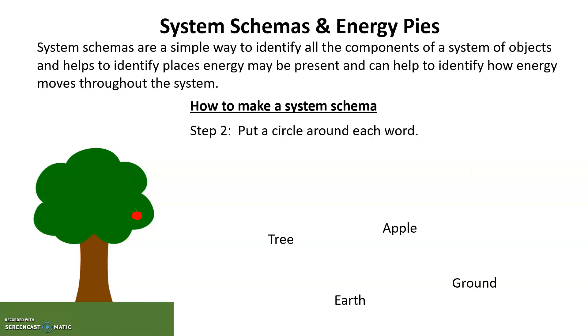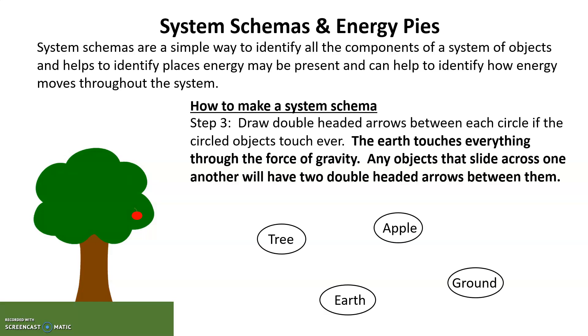Second, put a circle around each word. Third, draw double-headed arrows between each circle if the circled objects ever touched. The earth touches everything through the force of gravity, so you're going to draw a double-headed arrow between the earth and everything. Also, if there's any sliding occurring, you're going to have two double-headed arrows between those objects that are touching during the sliding.